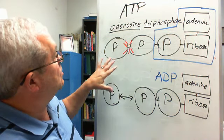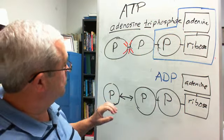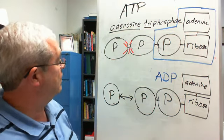So, adenosine triphosphate, three phosphate groups. Adenosine diphosphate with two phosphate groups.